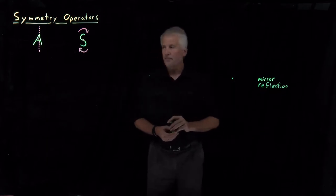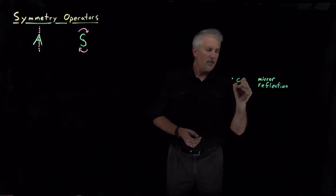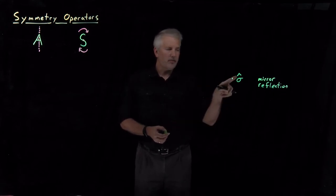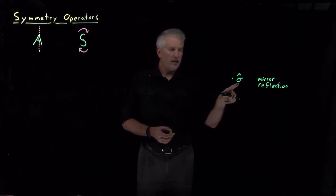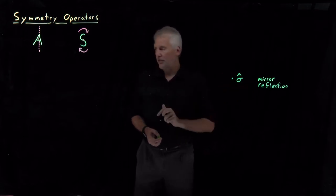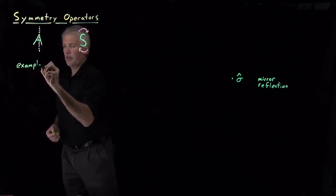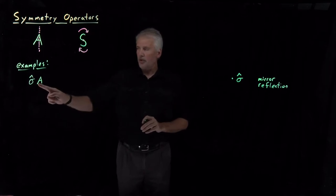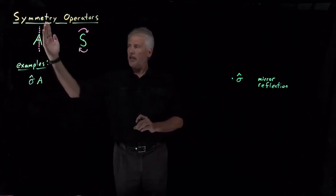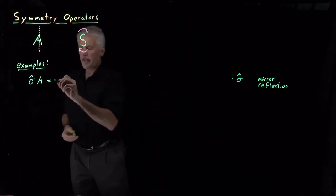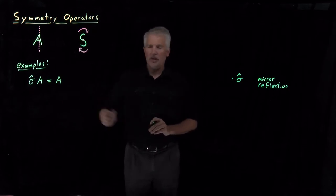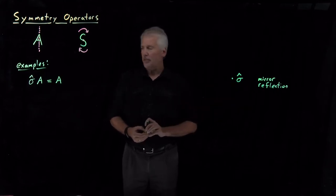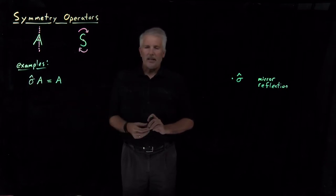For mirror reflection, the name we give to that operation is sigma — lowercase Greek letter σ with a hat on top. This is an example of a symmetry operator. If I take the sigma mirror reflection operation and apply it to the letter A — reflecting through the vertical mirror — the result is just the same letter I started with. That's why we decided the letter A was symmetric: it has this mirror reflection symmetry.